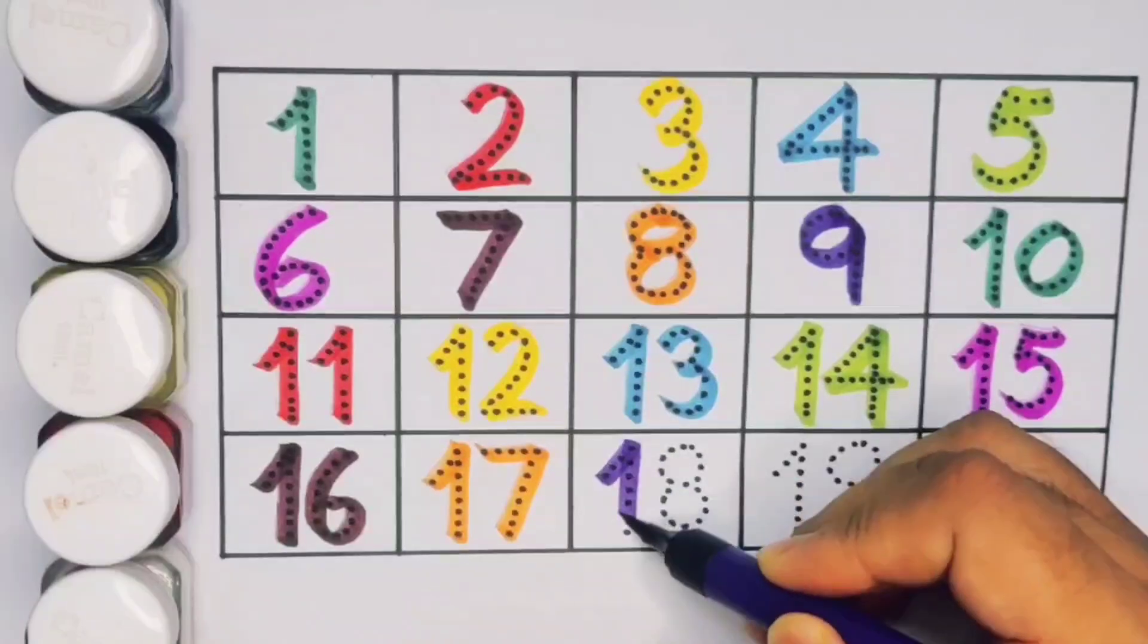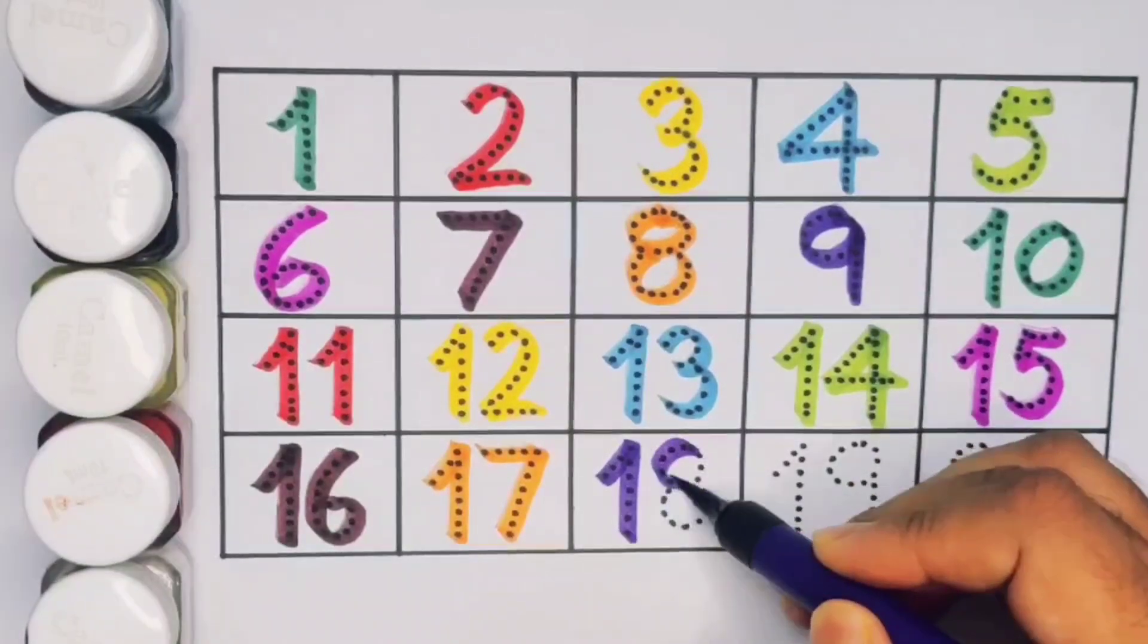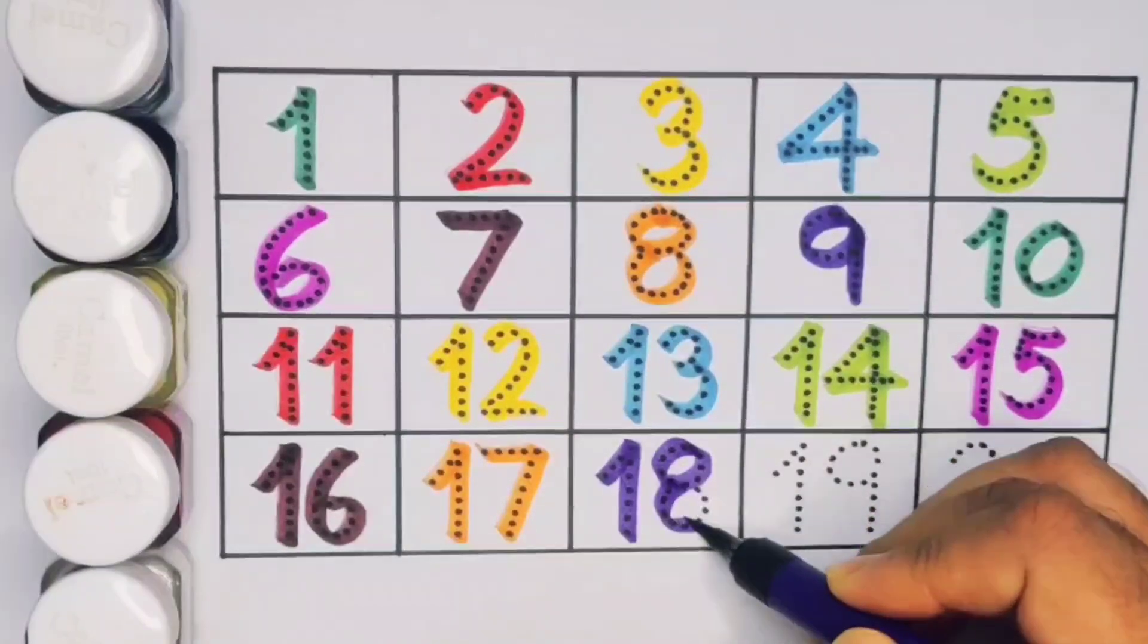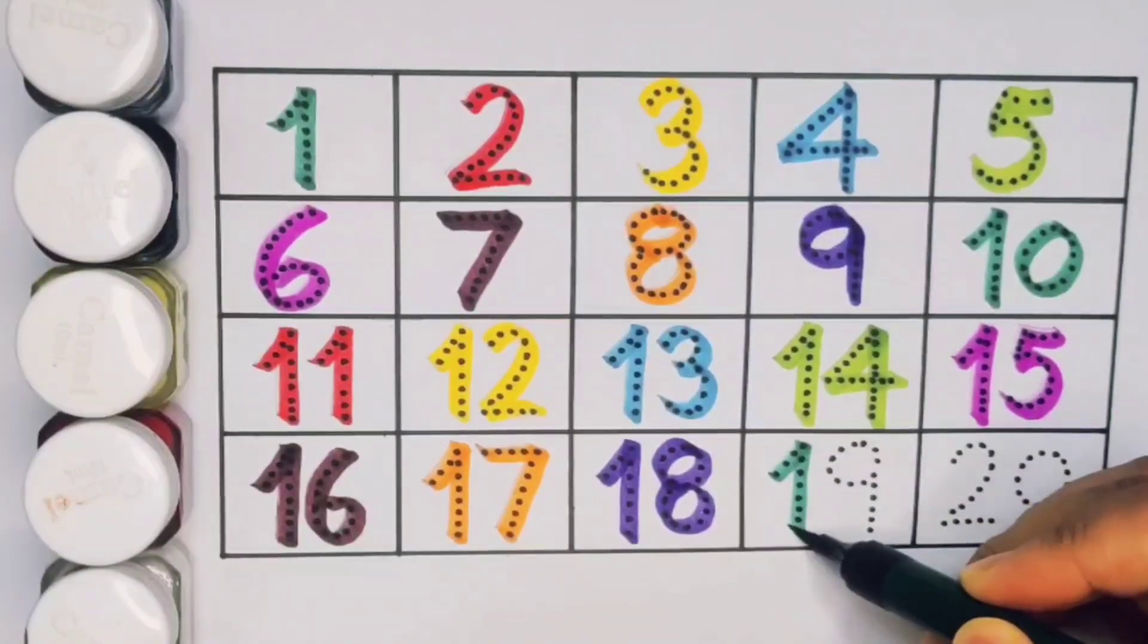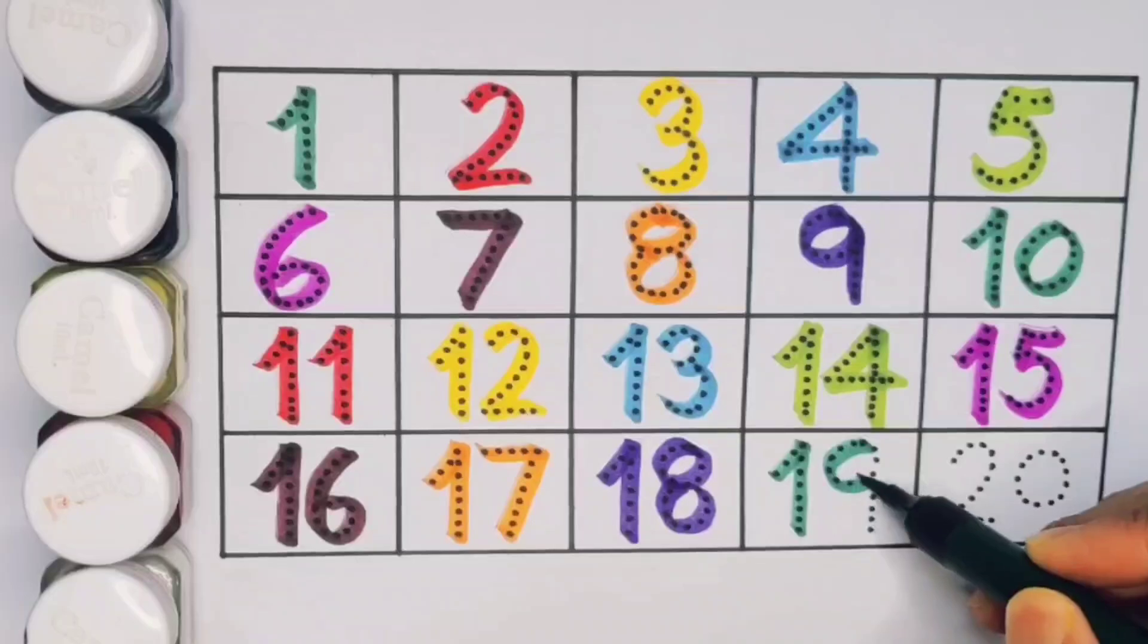Next kids 18, 1, 8, 18, number 18. Next kids 19, 1, 9, 19, number 19.